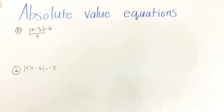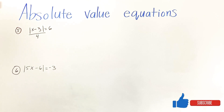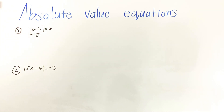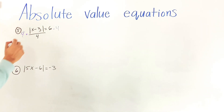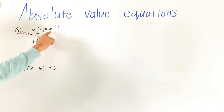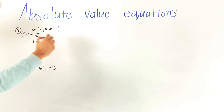For numbers five and six, try to challenge yourself — solve them and check your answers. If you haven't done so already, don't forget to like and subscribe. For number five, we know the absolute value has to be by itself, so we multiply by 4 on both sides. This cancels, leaving the absolute value of x minus 3 equals 6 times 4, which is 24.